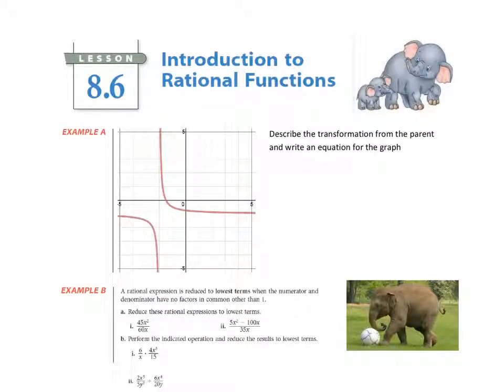Now, the last type of parent function that we're going to look at in this chapter is a rational function, and that parent function is of the form y equals 1 over x.